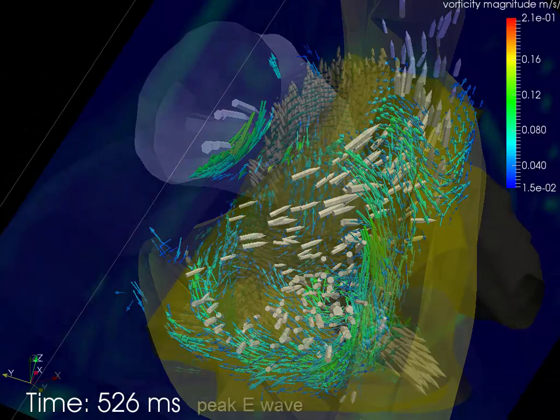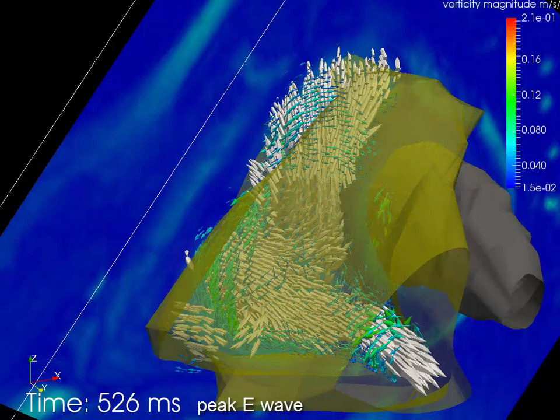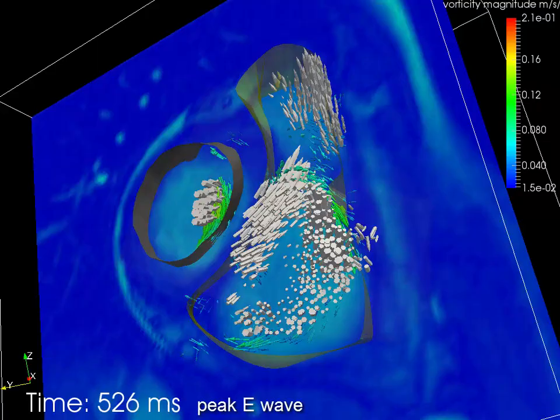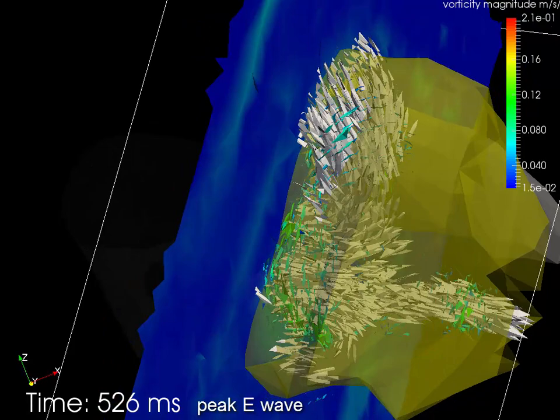Let's turn all the velocity vectors back on. Now we can see that flow is wrapping around the leaflets in only a few locations. In particular, we see no flow around behind the anterior leaflet.